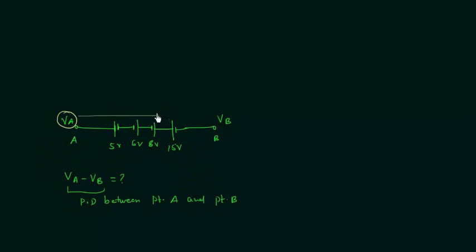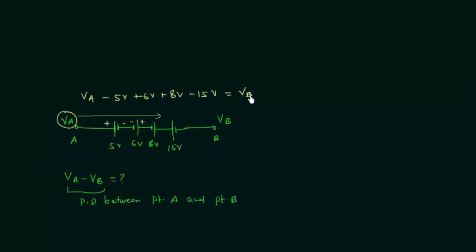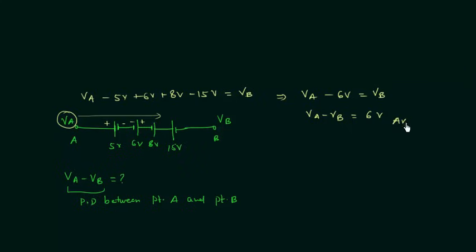We will start from Va and move towards Vb. Va minus 5 volts because of this plus-minus polarity, then plus 6 volts because we have minus and plus as the polarity of 6 volts, after this minus 8 volts, and the final potential difference minus 15 volts equals Vb. When you solve this you have Va minus 6 volts equal to Vb, or Va minus Vb equal to 6 volts. This is the answer.